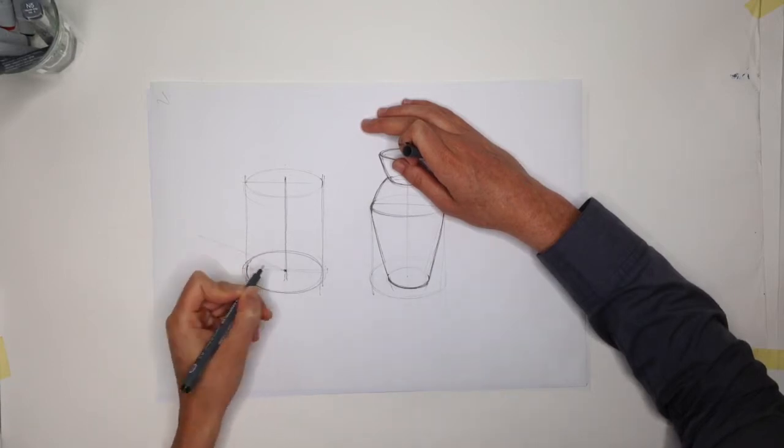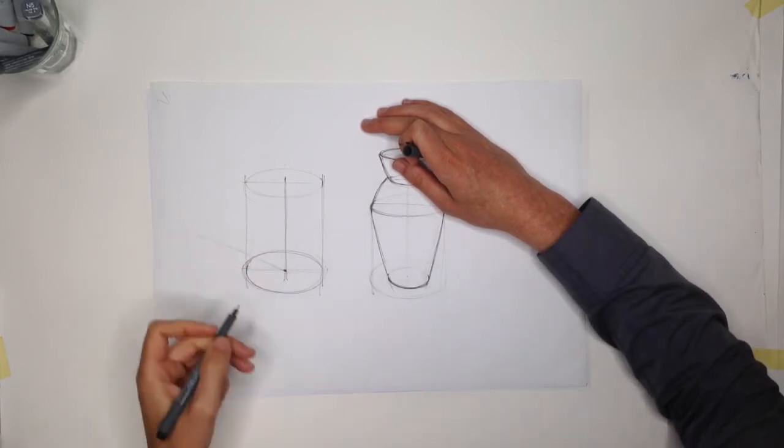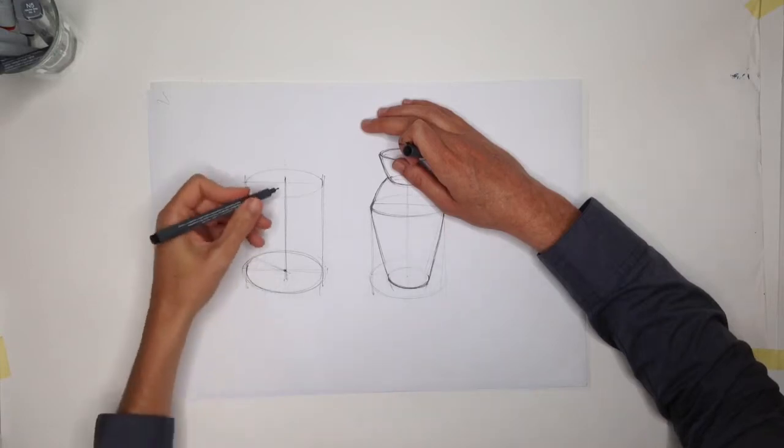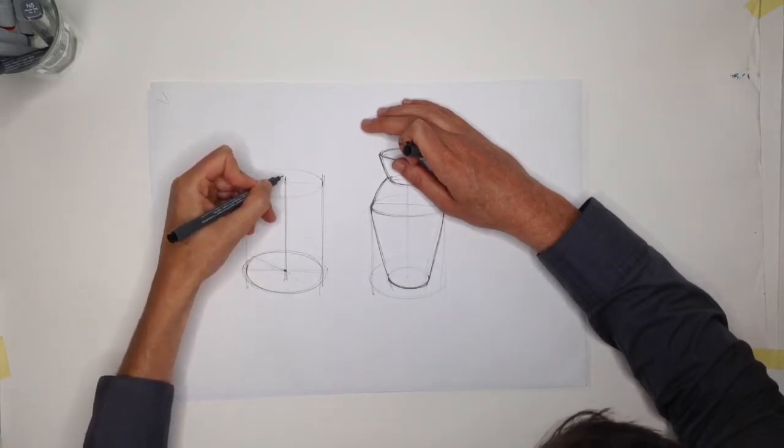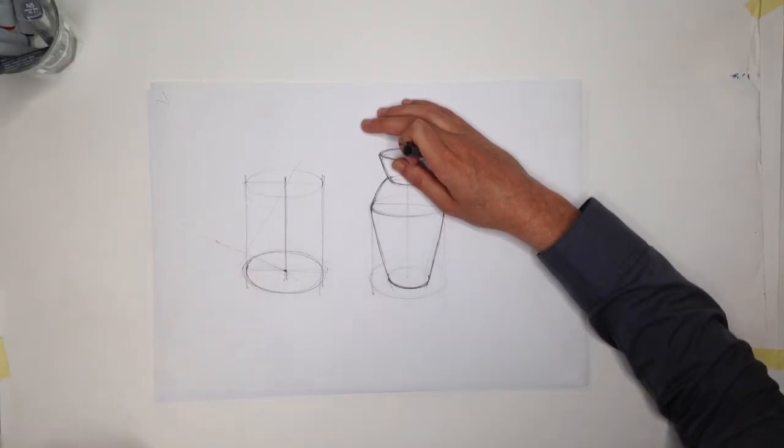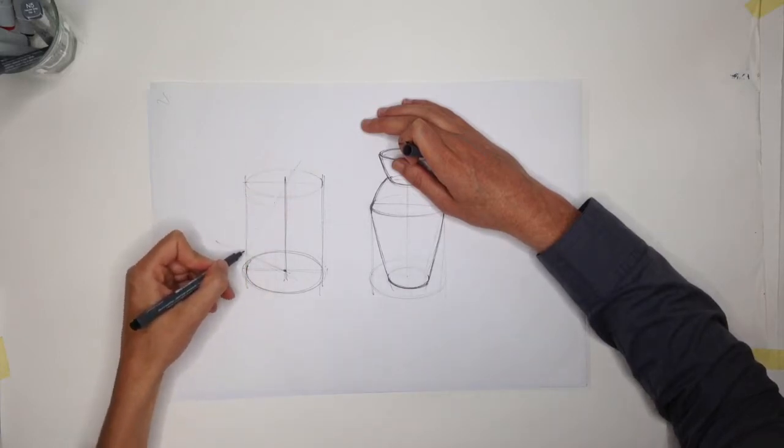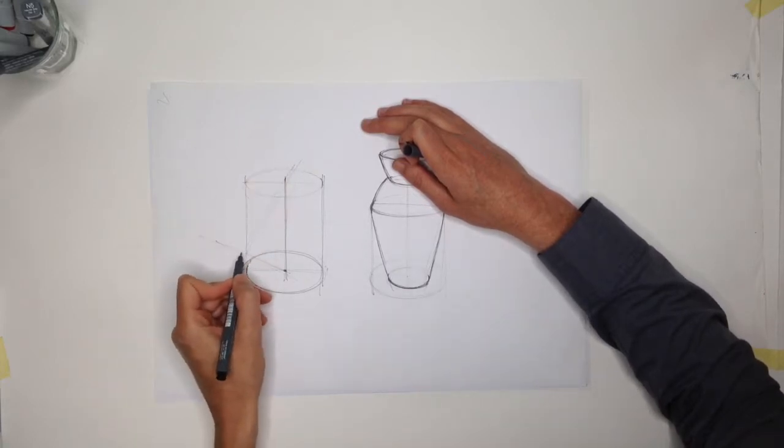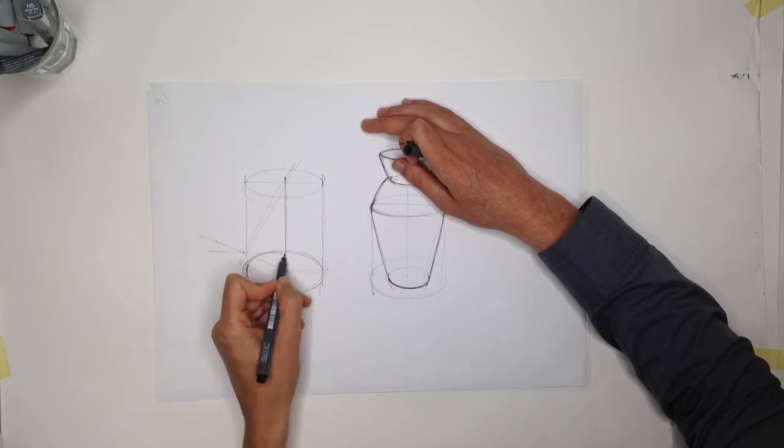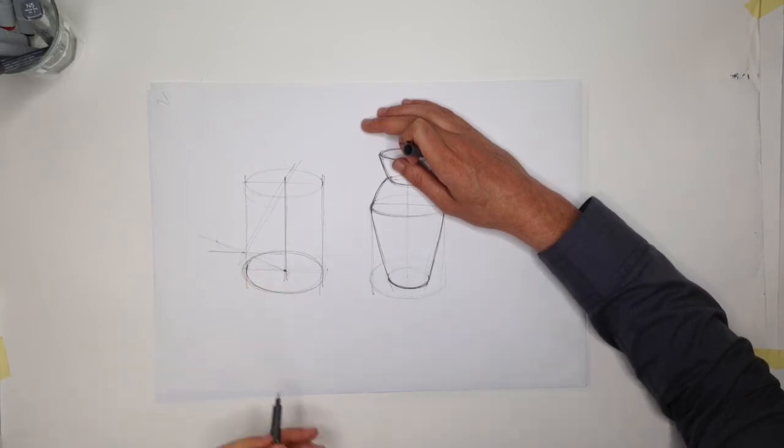I'm going to draw a line from the ground surface from the rotational axis in the light direction. Then I'm going to draw a line through the top point, and I'm going to draw another line where those two cross.